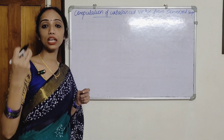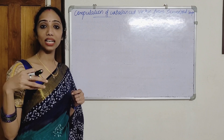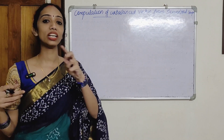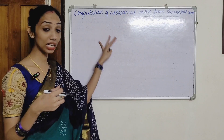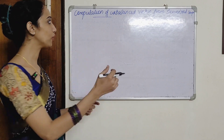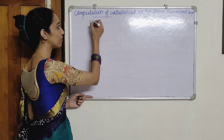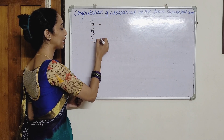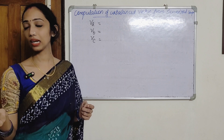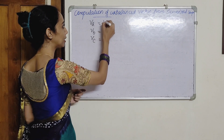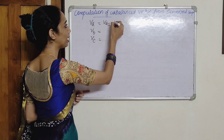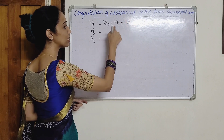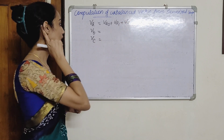The unbalanced components are VA0, VA1, and VA2. I will show you the unbalanced vector components of symmetrical VB and VC. I will show you the derivation with the original vectors of VA, VB, and VC. This is the sum of symmetrical components: VA0 plus VA1 plus VA2 — that is zero sequence, positive sequence, and negative sequence.